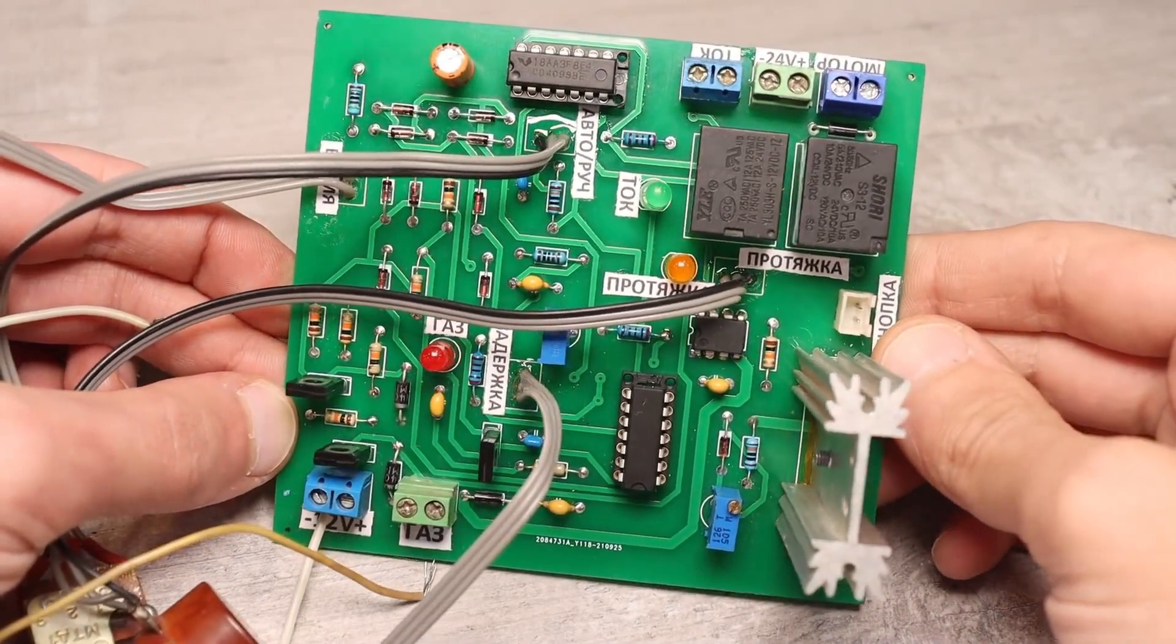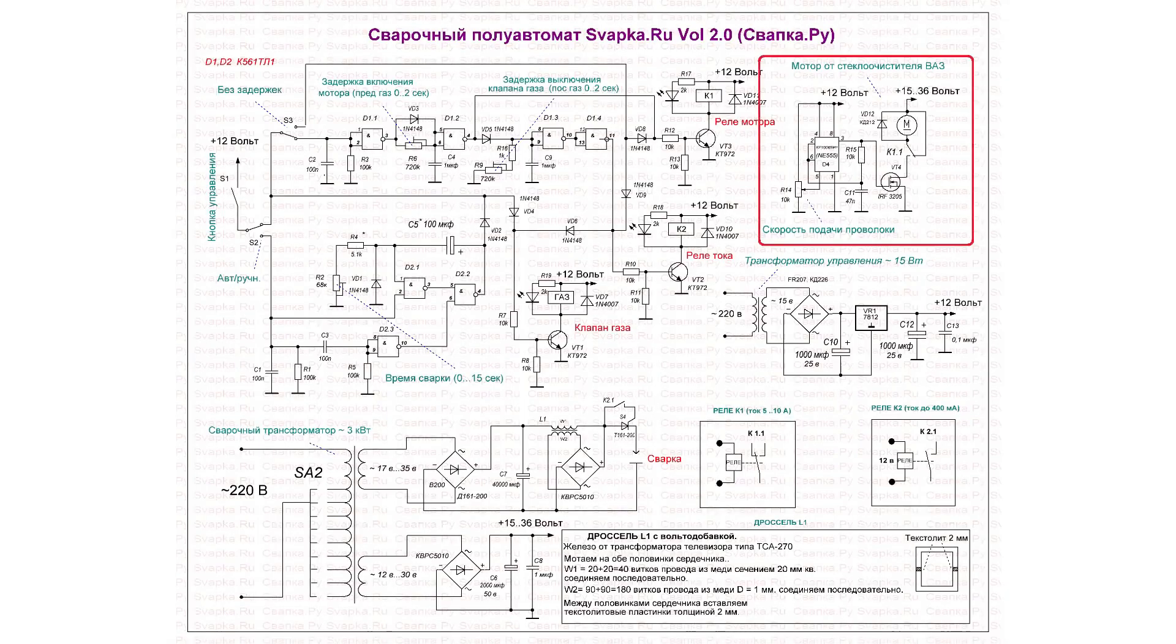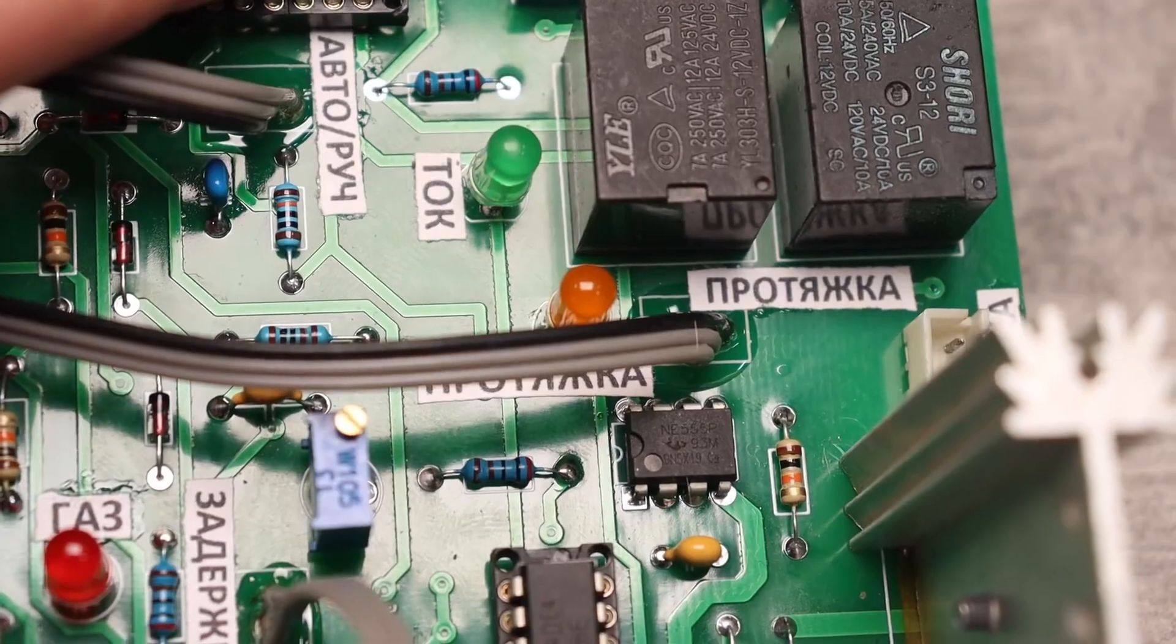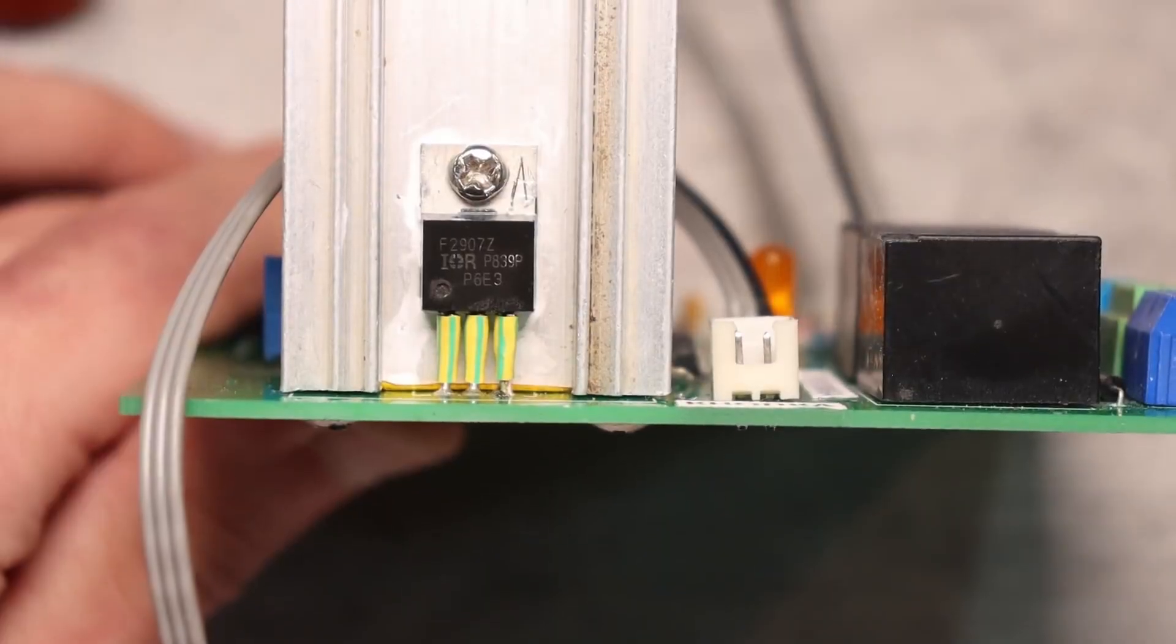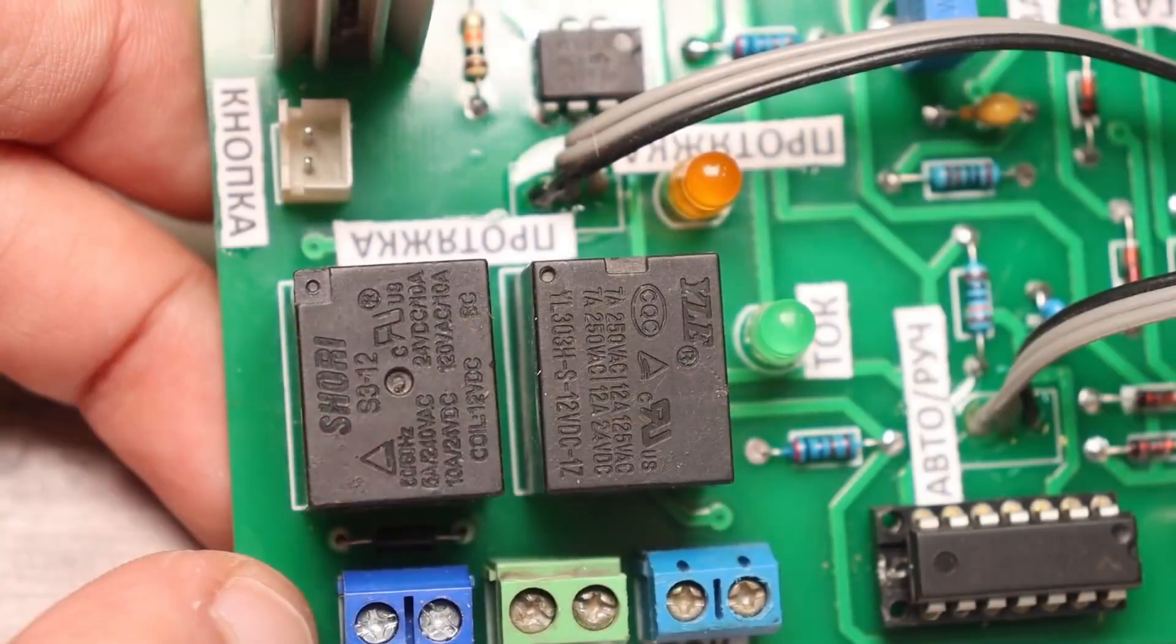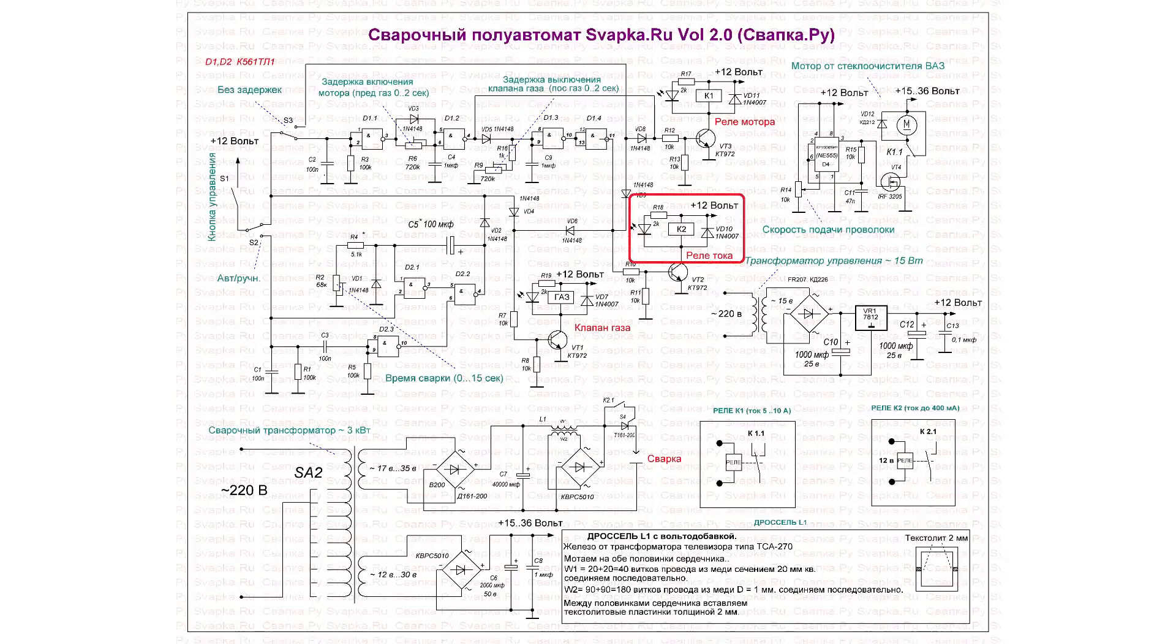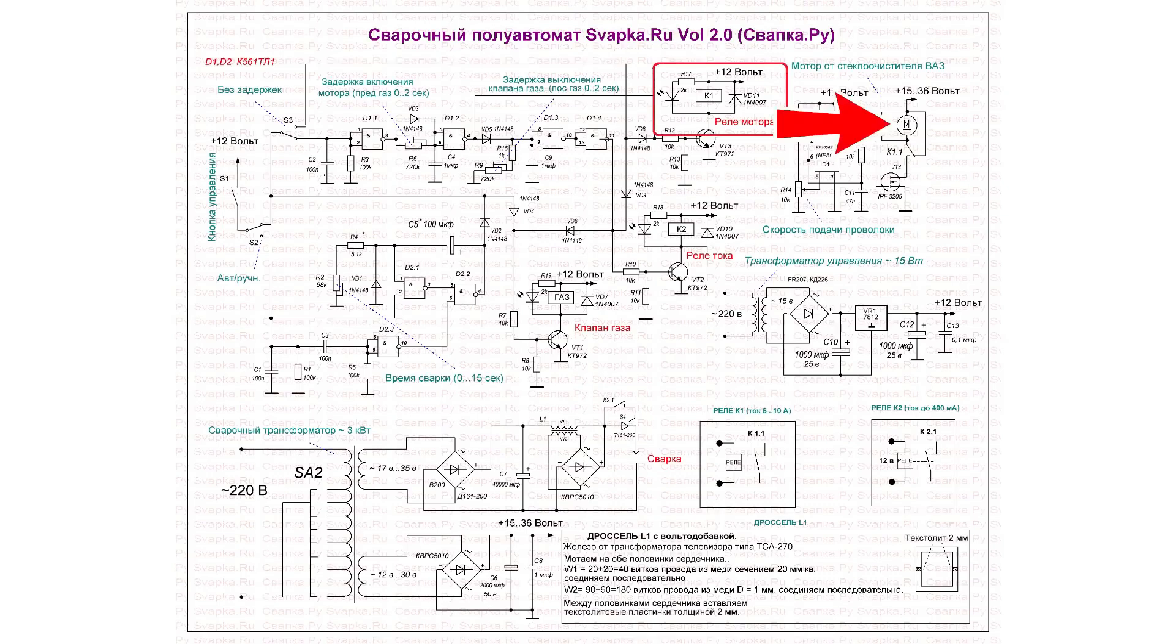On this board, a simple PWM controller is assembled using a 555 timer and a MOSFET, which controls the feed motor. There are a couple of relays. One of them is activated when the button on the sleeve is pressed and opens the power thyristor, which, in turn, is responsible for supplying current to the wire, that is, for turning the welding current on or off.